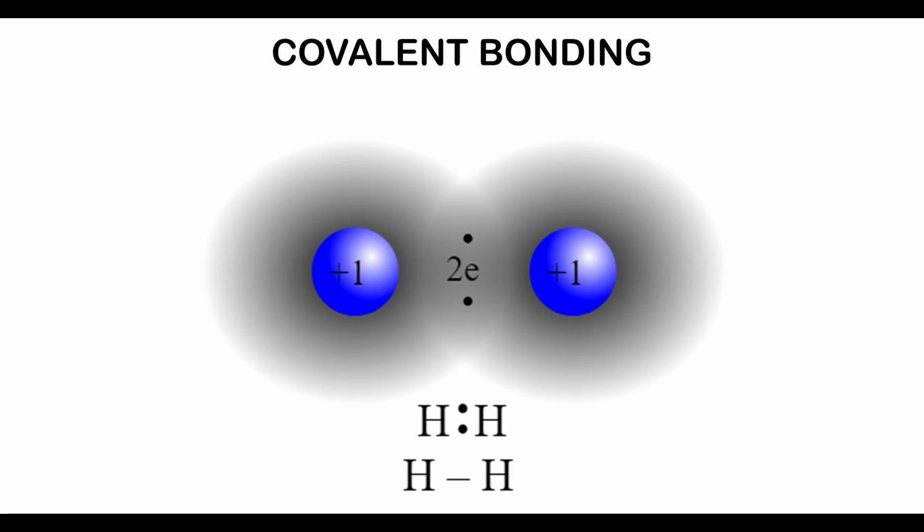In this chapter we will discuss how the bonding in molecular compounds is different from the bonding in ionic compounds, and how the electrons affect the shape of molecules. The bonds that hold the atoms together in hydrogen gas are not ionic bonds, but covalent bonds.